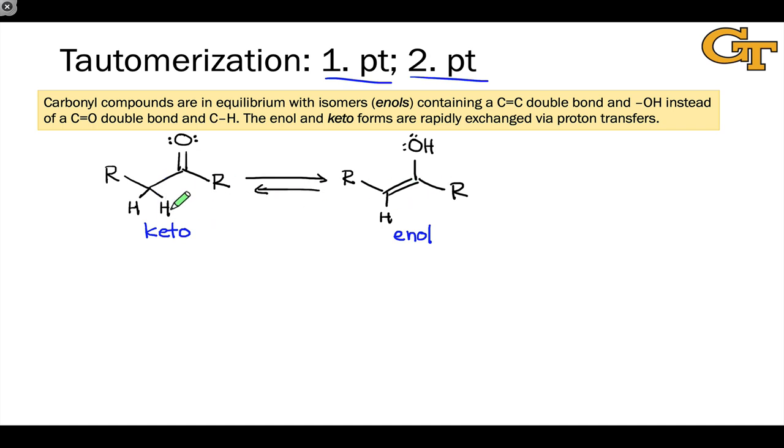Keto and enol forms of a particular carbonyl compound differ in the position of a hydrogen with respect to a three-atom pi system. If we think about the enolate, the conjugate base of the enol or the keto form, as a three-atom pi system involving the alpha carbon and the carbonyl group, shift of a proton from one end of that pi system to the other interconverts the keto and enol forms. Isomers that are related in this way through the shift of a proton across a pi system are called tautomers, and the keto and enol tautomers of a carbonyl compound are probably the most famous example of tautomers.